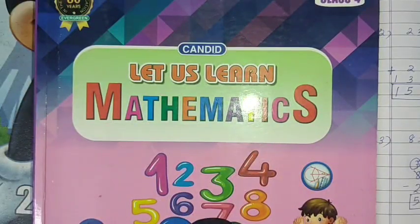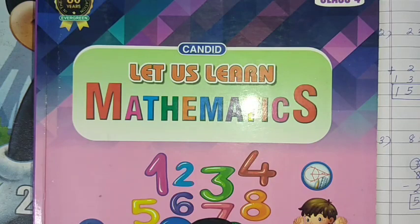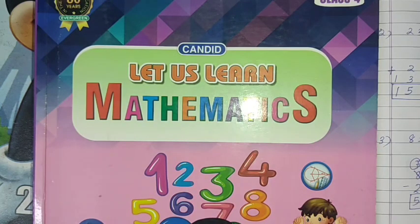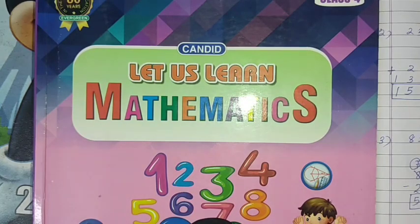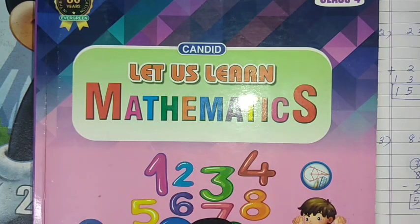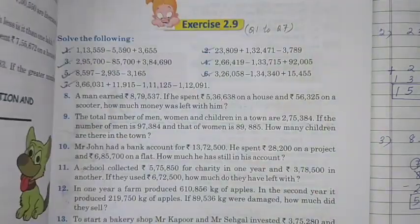Now we'll do Exercise 2.9. In Exercise 2.9, question number 1 to 7 are in your syllabus. It is mixed - mixing of addition and subtraction together.